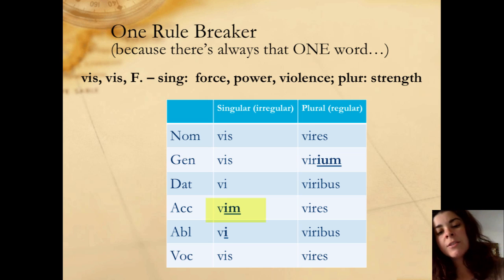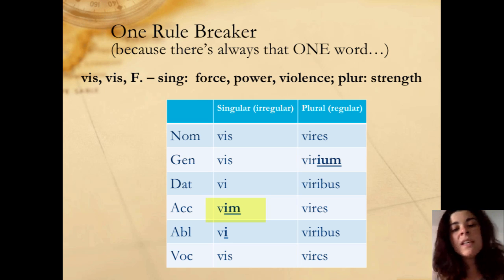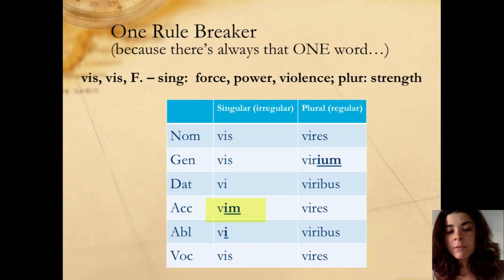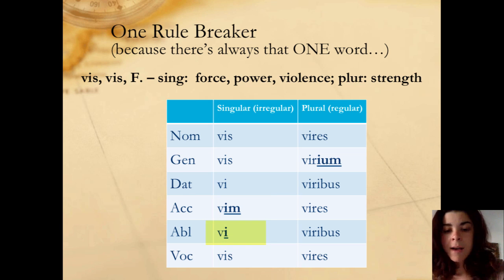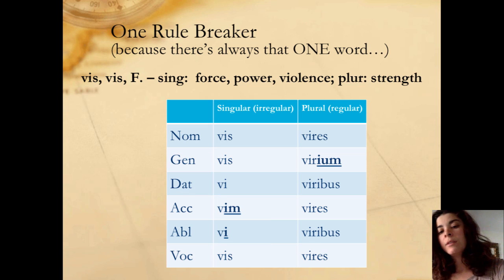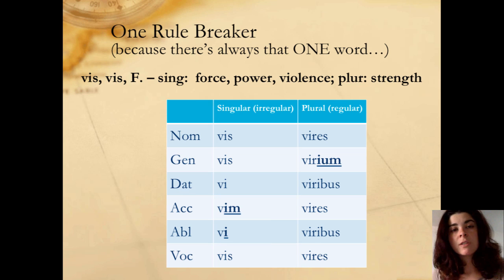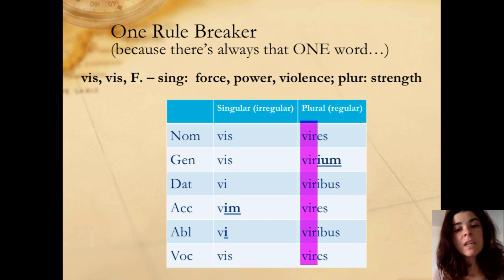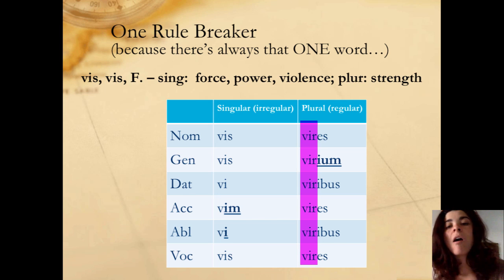In the accusative, instead of VEM, it's VIM — V-I-M. And the ablative is going to be VI instead of VE. Then in the plural, the stem changes from just V to VIR.